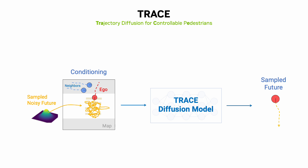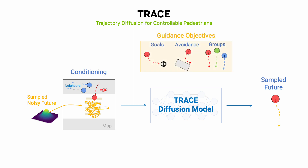How do we enable user controllability with this model when neural network approaches are typically bad at meeting constraints at test time? Diffusion models are actually pretty well suited for this through what's called diffusion guidance. In our case, guidance uses differentiable objectives from the user, like go to a goal waypoint, avoid collisions, and travel in a specific social group. These objectives are used to directly perturb the denoising process to encourage sample trajectories to follow user controls.